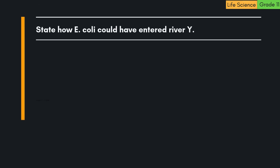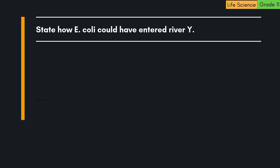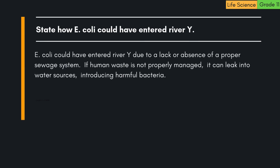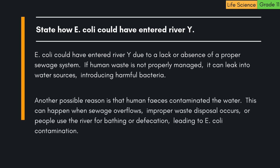Question: State how E. coli could have entered River Y. 1. E. coli could have entered River Y due to a lack or absence of a proper sewage system. If human waste is not properly managed, it can leak into water sources, introducing harmful bacteria. 2. Another possible reason is that human faeces contaminated the water. This can happen when sewage overflows, improper waste disposal occurs, or people use the river for bathing or defecation, leading to E. coli contamination.